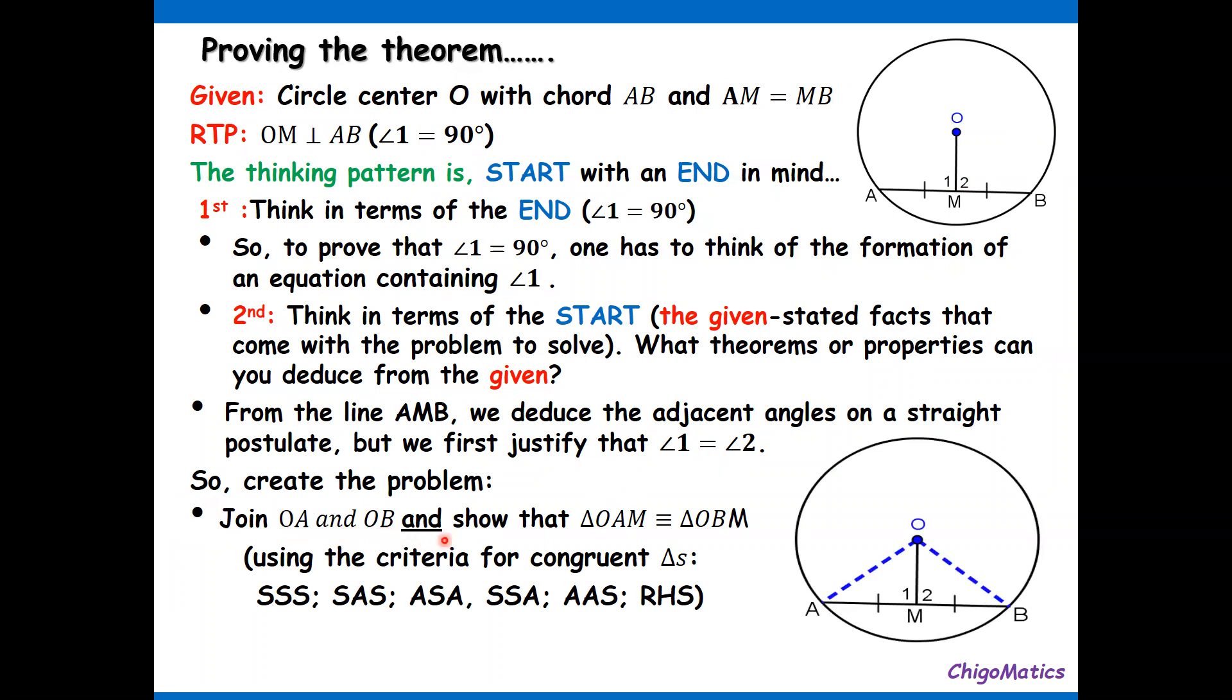So create the problem: join OA and OB and show that triangle OAM is congruent to triangle OBM. Why showing congruence? Because at the end we can conclude that angle one is equals to angle two since they are corresponding angles in the triangles. So when you show the congruence, you use any one of these criteria depending on what is given, then justify angle one is equal to angle two using corresponding parts of congruent triangles are congruent.